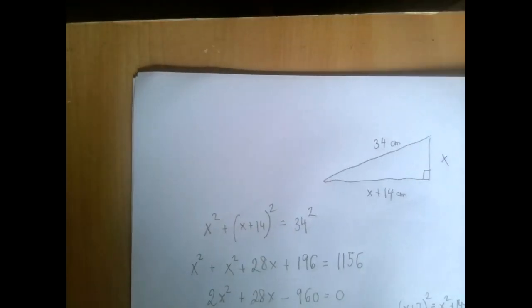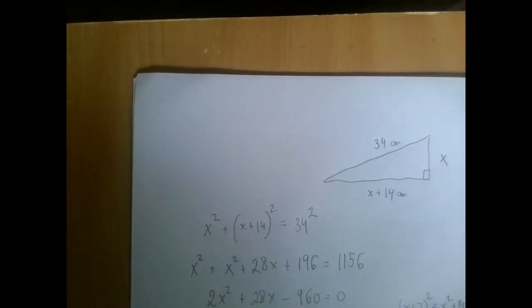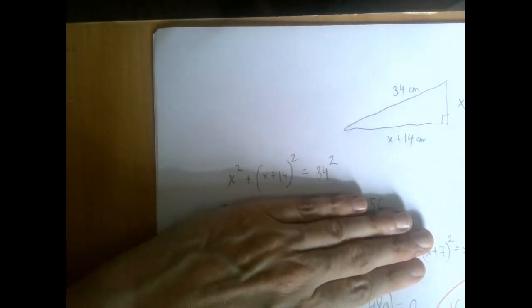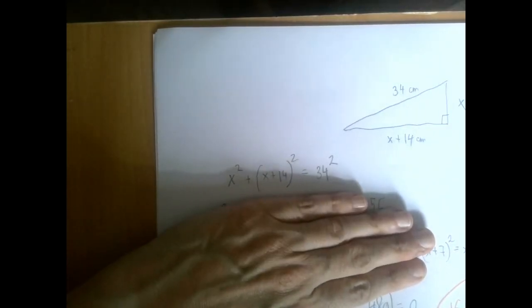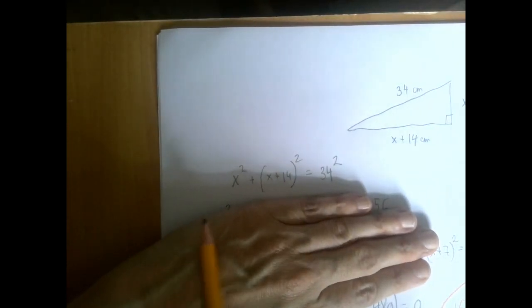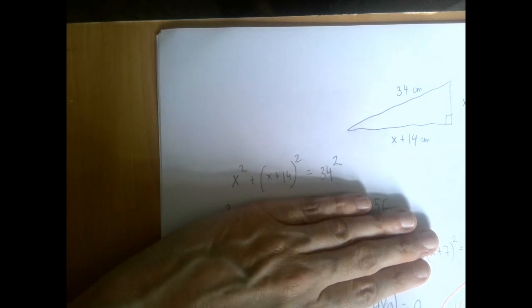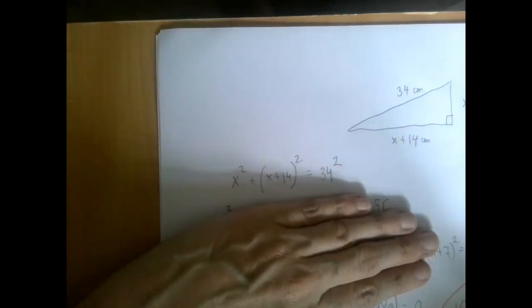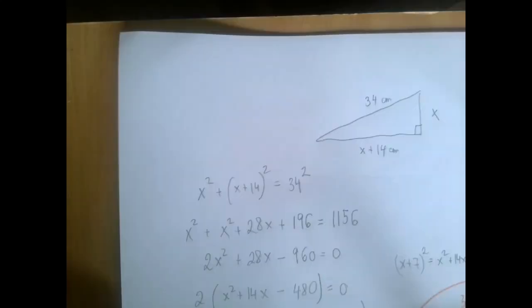You can stop the video, but I have one comment. I frequently see the following mistake: sometimes students say the next line is, why don't we just erase the square from everywhere? Why don't we just say x plus (x plus 14) equals 34? What a lovely, nice equation we get this way.